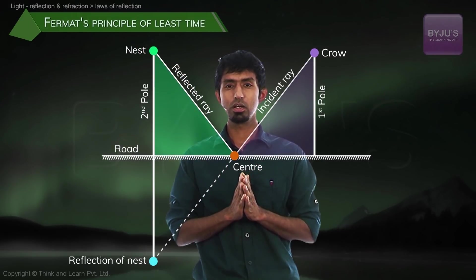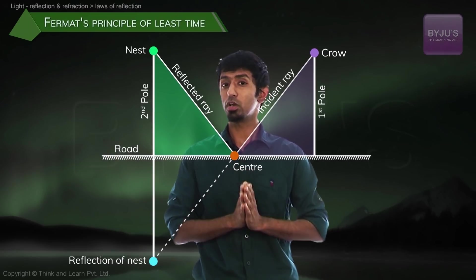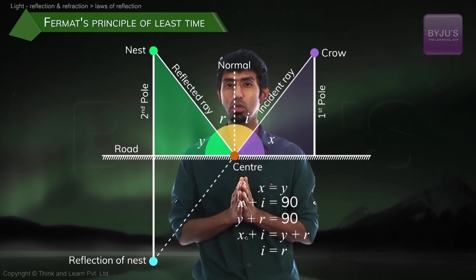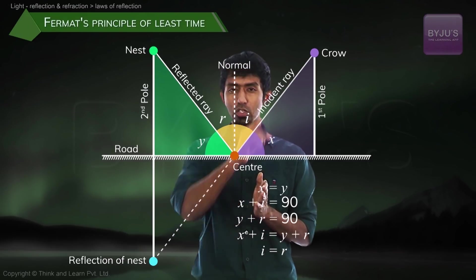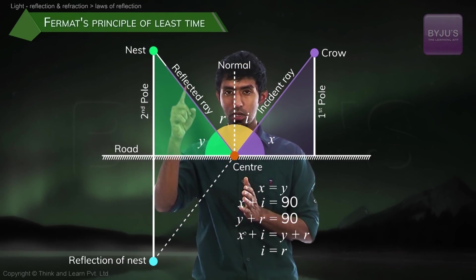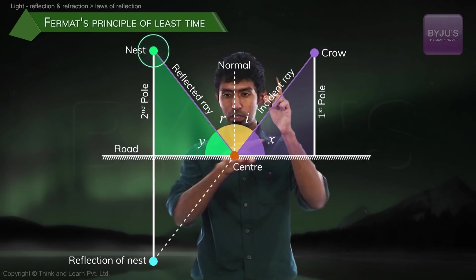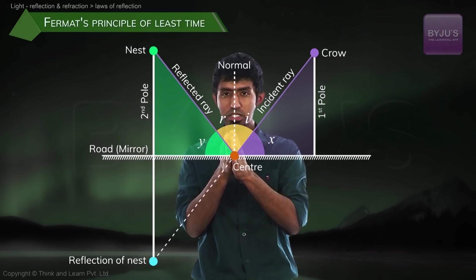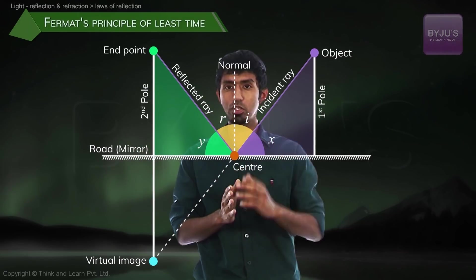These two triangles are congruent. You already know what congruent triangles are, which means that these two angles are going to be equal and those two angles are also going to be equal. And what have we just proved? That the shortest path between this point and that point touching the mirror is going to be the point such that it hits the center of that mirror.